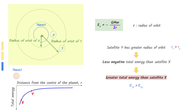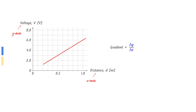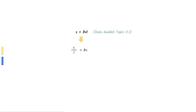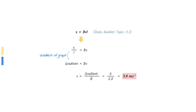Gradients of a graph can be found by dividing delta y by delta x. Draw a triangle on the graph to find the values for delta y and delta x. Note that the y-axis is voltage and the x-axis is distance. The voltage on the graph is the EMF induced on the bar and the distance given is the length of the bar. The equation for induced EMF from the data booklet can be arranged to make EMF over L, which equals the gradient found earlier. Rearrange to make speed v the subject, then put in the values of the gradient and magnetic field strength to find your answer.